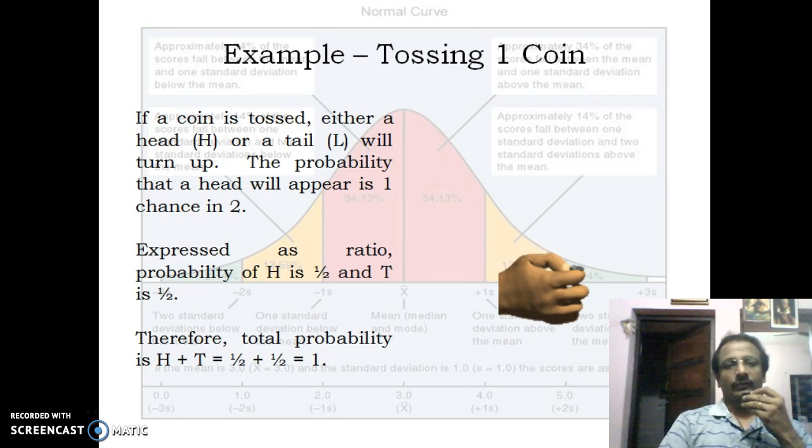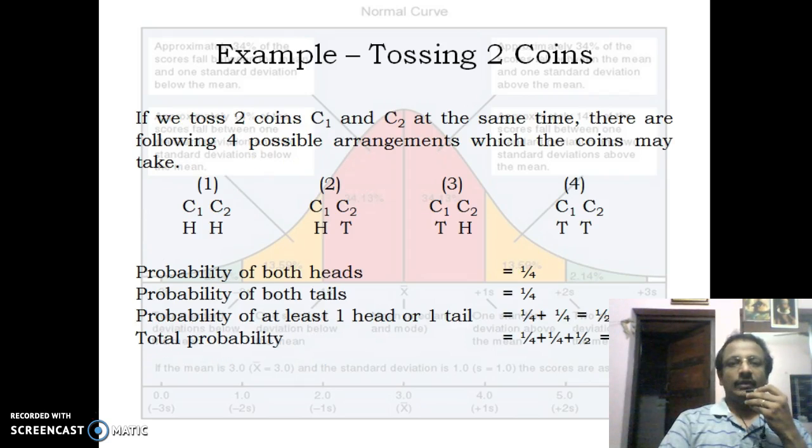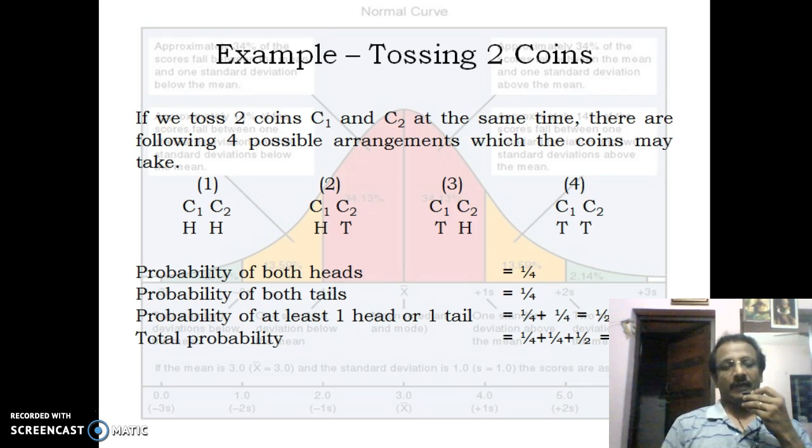When we toss two coins together, C1 and C2, there are four possible outcomes. C1 and C2 both heads is one chance. C1 head and C2 tail is another chance. But to obtain one head and one tail, the chance is 1/4 + 1/4, that is half, because either C1 can be heads and C2 tails, or vice versa.